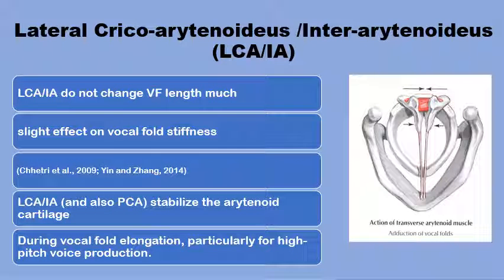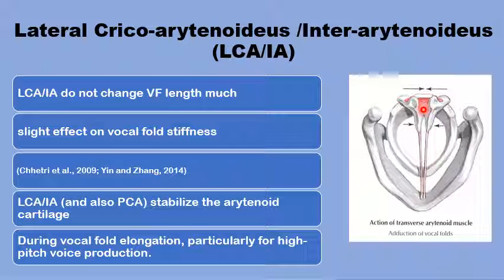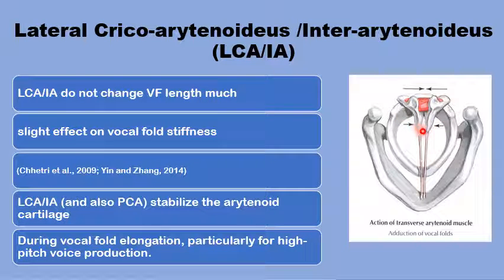Starting with the major adductor muscle of the vocal folds, the lateral cricoarytenoid. This is the muscle that brings about the two vocal folds in adduction to meet towards the midline during phonation. The lateral cricoarytenoid functions, helped by a weaker adductor, the interarytenoid muscle. Both muscles — the lateral cricoarytenoid and the interarytenoid muscle — displace the vocal fold medially, but with little change in the vocal fold length and also slight effect on the vocal fold stiffness.